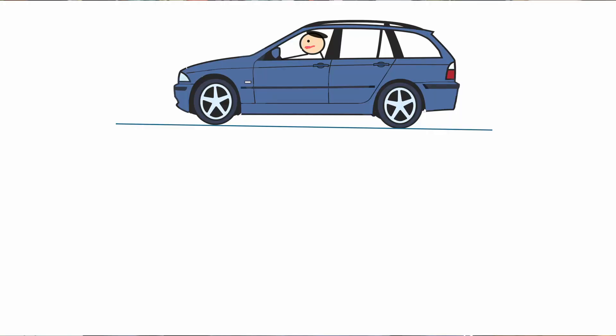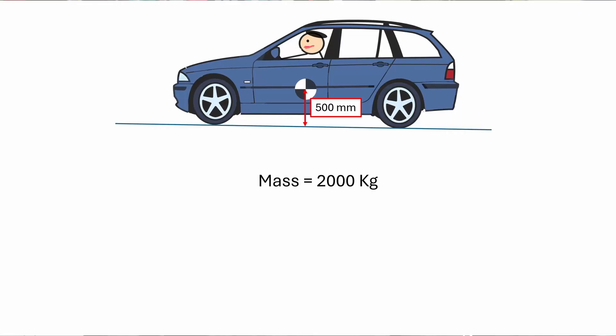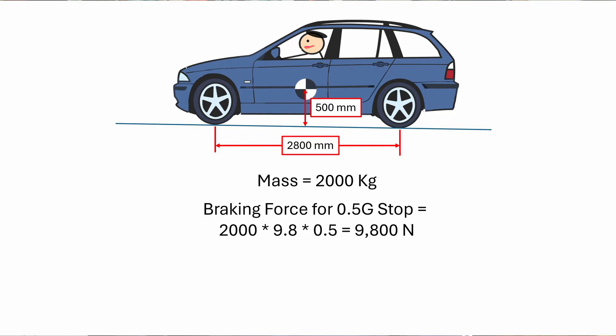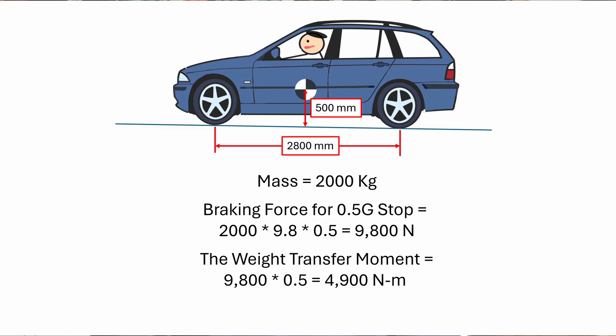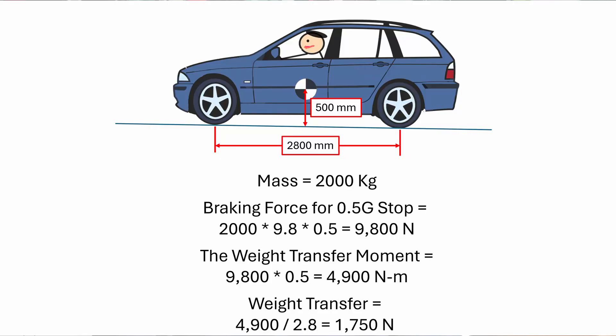Let's look at an example. We'll assume a car that is 2,000 kilograms, has a center of gravity 500 millimeters above ground, and a wheelbase of 2,800 millimeters. For a 0.5g stop, we get 2,000 × 9.8 × 0.5 = 9,800 newtons of braking force. Since the CG height is 0.5 meters, the moment will be 9,800 × 0.5 = 4,900 newton-meters. With a wheelbase of 2.8 meters, the force pushing down on the front wheels will be 4,900 ÷ 2.8 = 1,750 newtons.